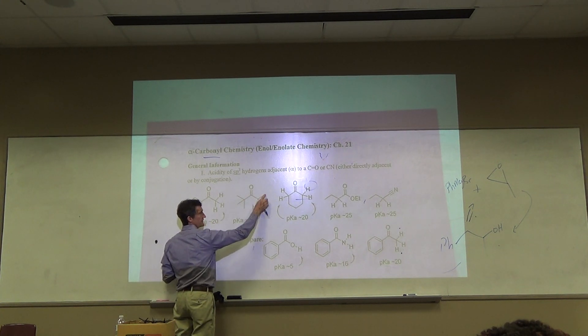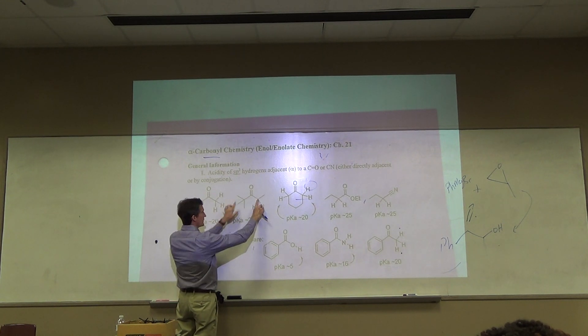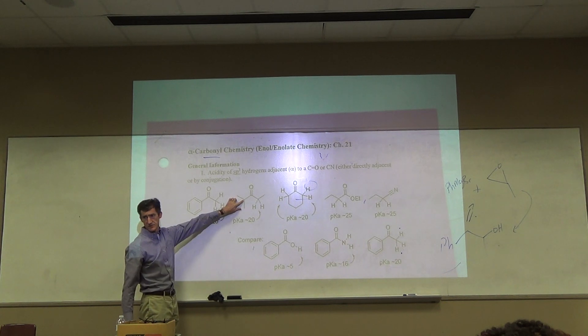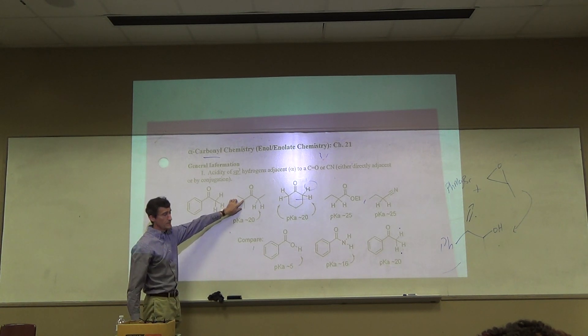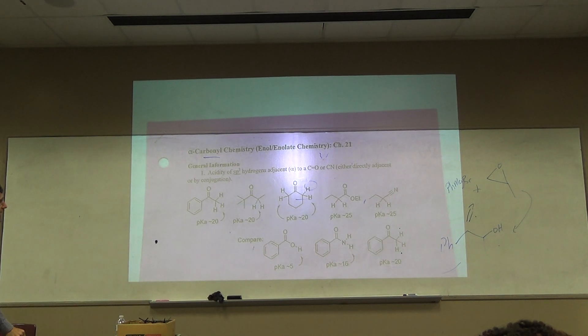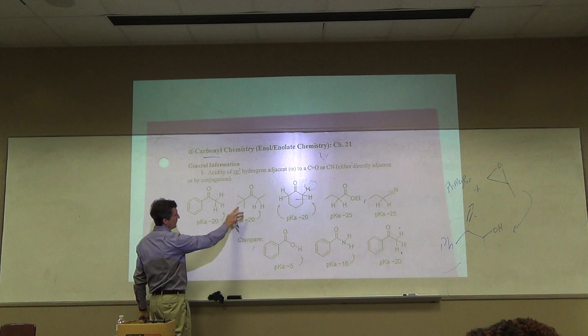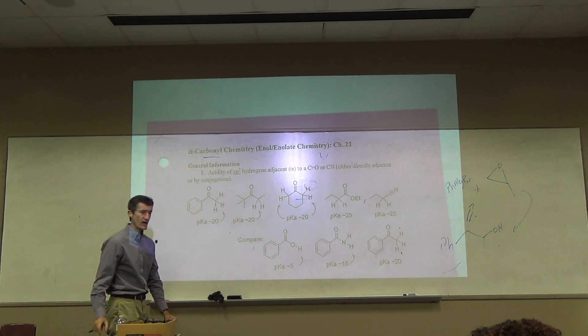Okay. The first thing that we're going to understand is acidity of sp3 hydrogens adjacent, alpha to the carbonyl or cyano group. The pKa of these alpha hydrogens on the alpha carbon. So you compare it to the carbonyl. The first carbon's alpha. The next carbon's beta. This compound has two alpha carbons. One here, one here. But this alpha carbon does not have any H's. So I'm talking about those H's.